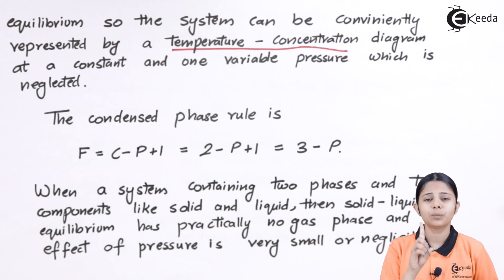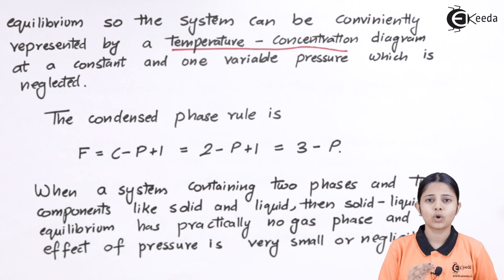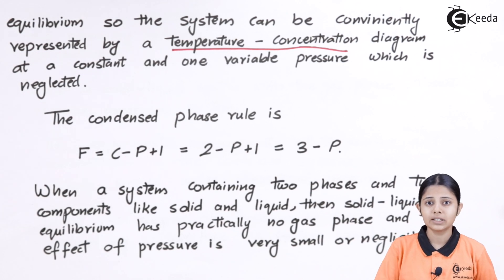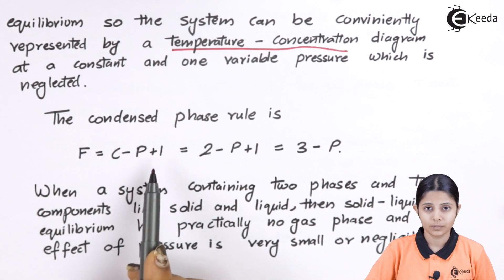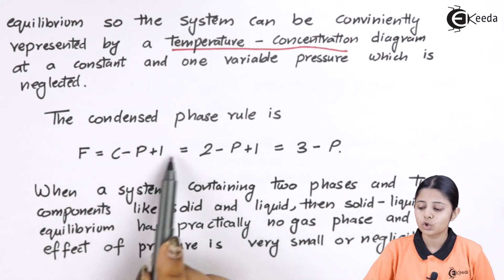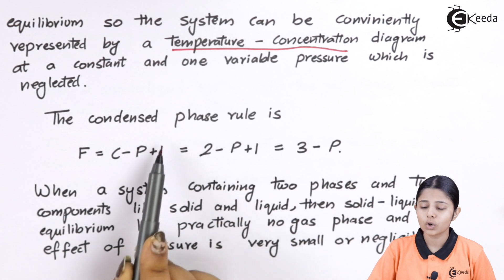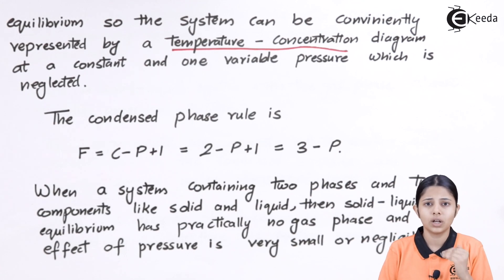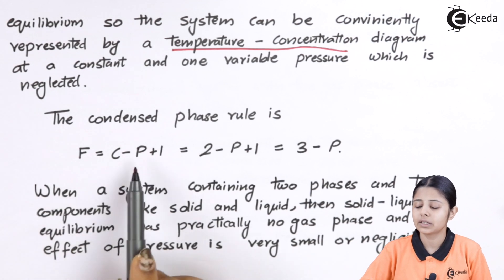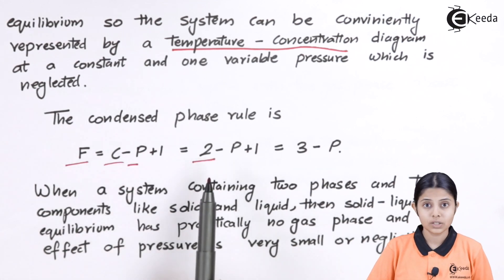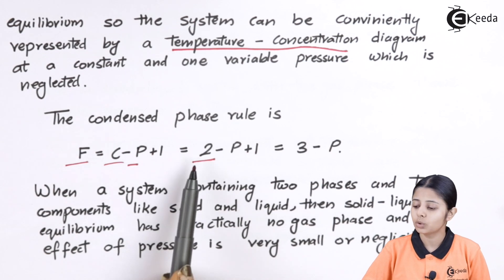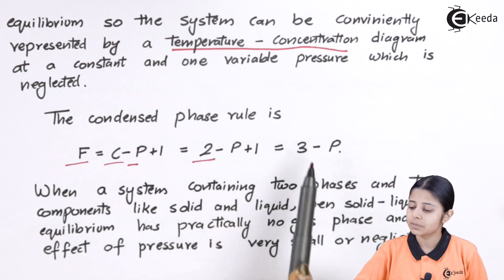The condensed phase rule is always one number lower than the normal phase rule. The normal phase rule is F = C − P + 2, but the condensed form is F = C − P + 1. Since we have two components (C = 2), this becomes F = 2 − P + 1 = 3 − P. Therefore, the degrees of freedom F equals 3 minus the number of phases P.